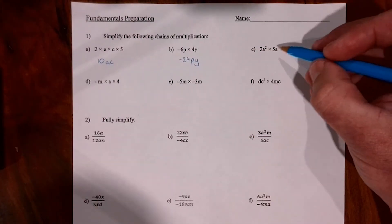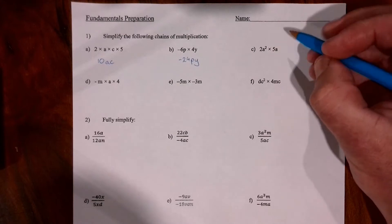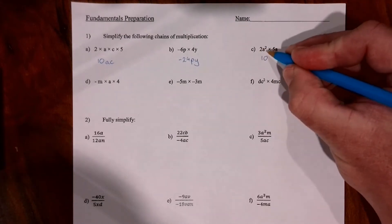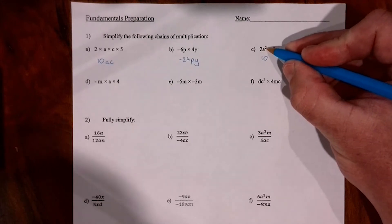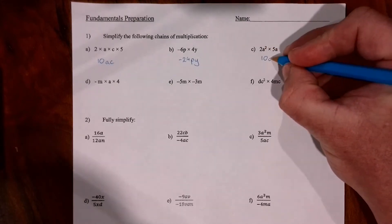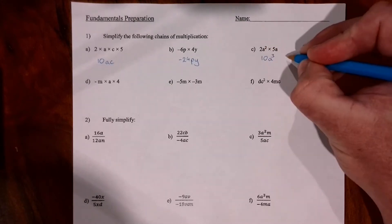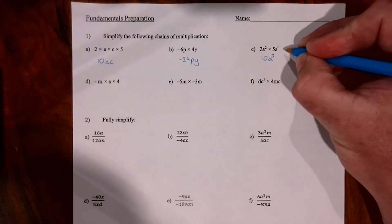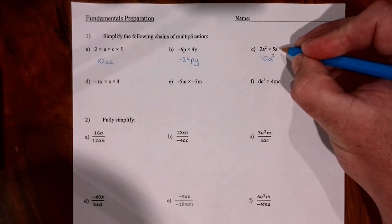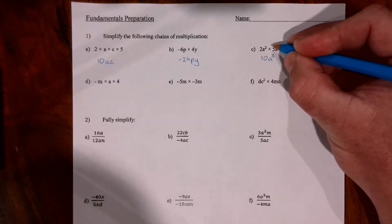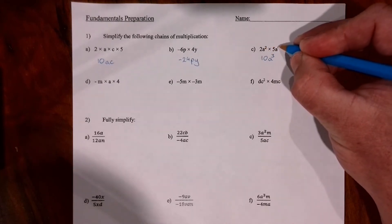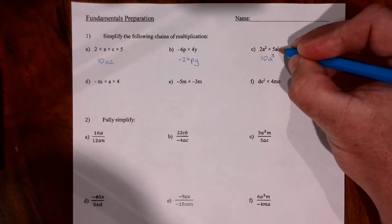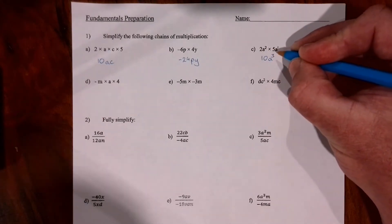Question 1c has indices. We collect our numbers — two fives are ten. Then a times a times a becomes a to the power of three. There's actually a little one on the first a that we don't write. For anyone up to index notation: when we multiply indices we add them, which you'll learn in Year 9. For now, just count up your a's and put the little number at the top.